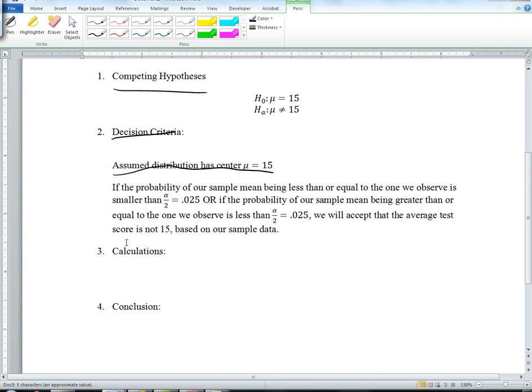We will say that our decision is if the probability of our sample mean being less than or equal to the one we observe is smaller than 0.025, or if the probability of our sample mean being greater than or equal to the one we observe is less than 0.025, we will accept that the average test score is not 15 based on our sample data.